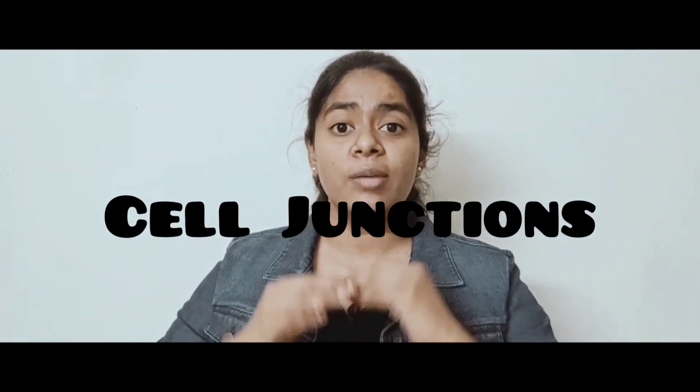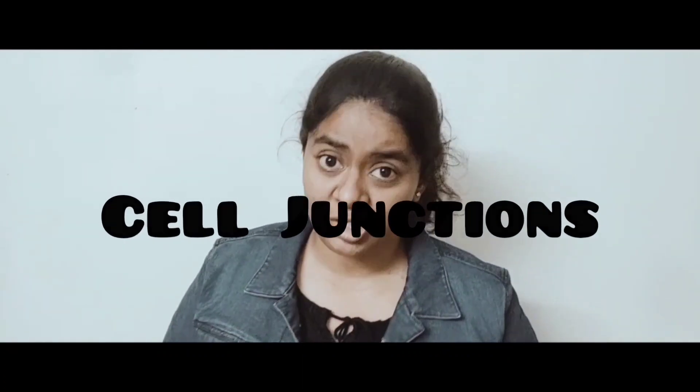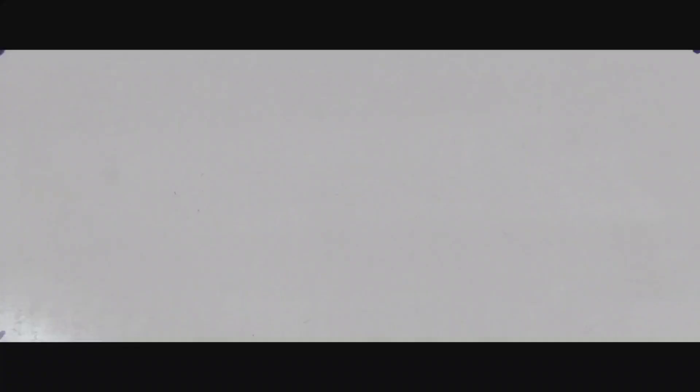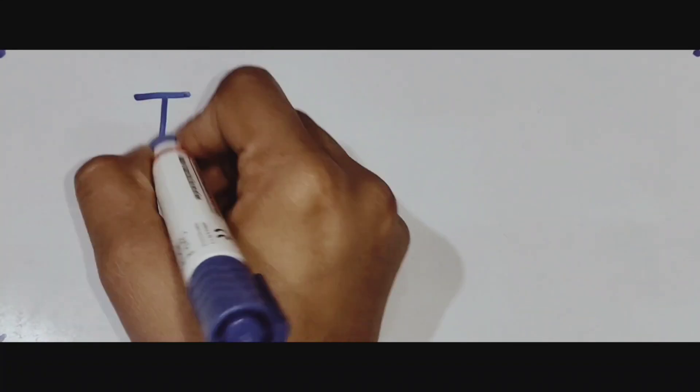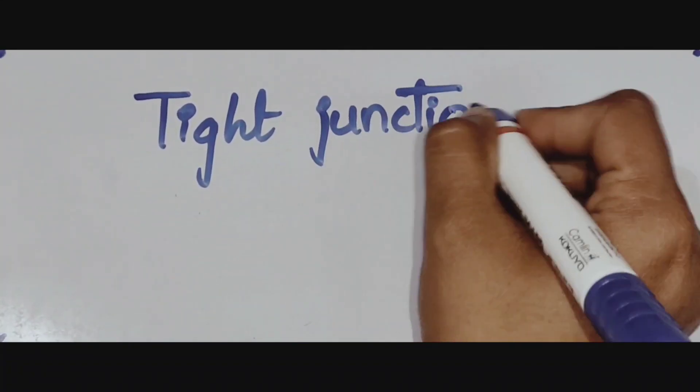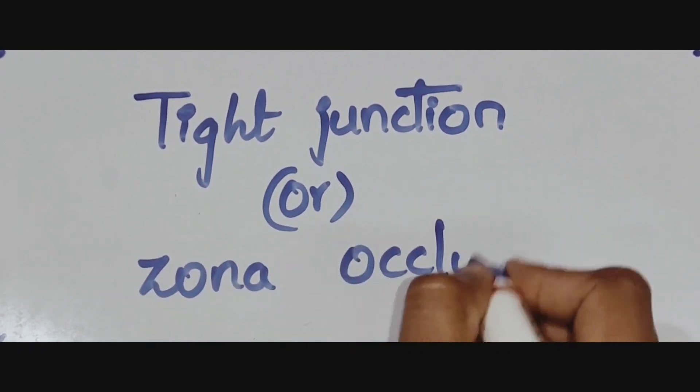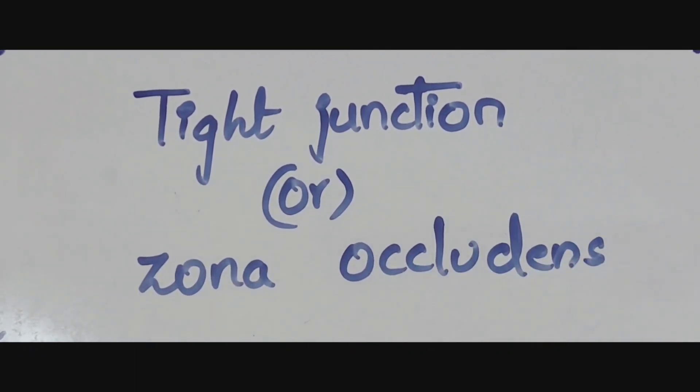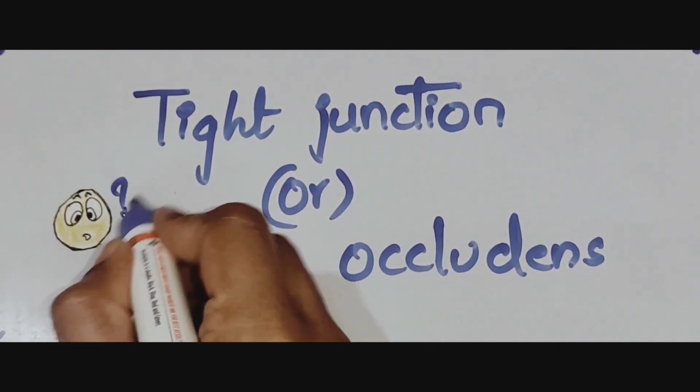Today we are going to learn about cell junctions. There are three different types: occluding junctions, anchoring junctions, and communicating junctions. Let us start with the occluding junction, which includes the tight junction — also known as zona occludens.